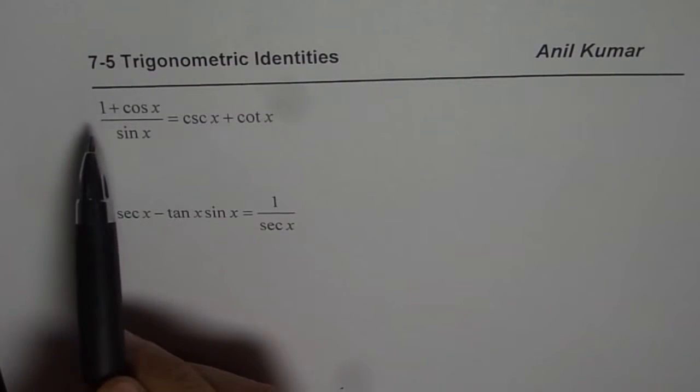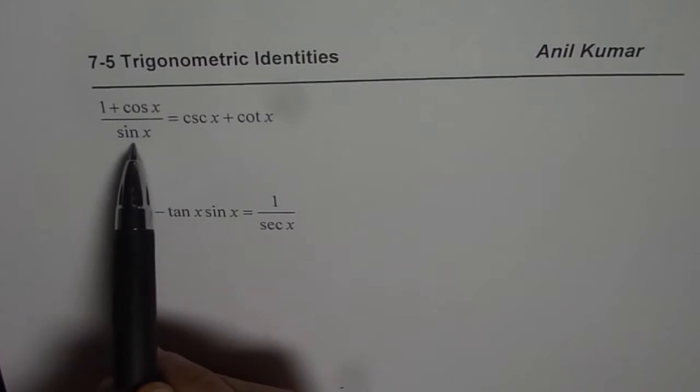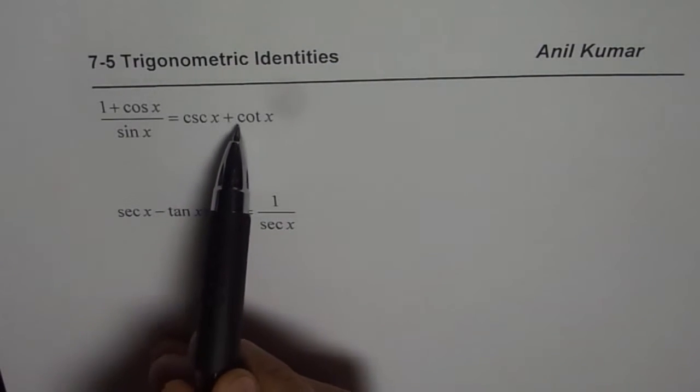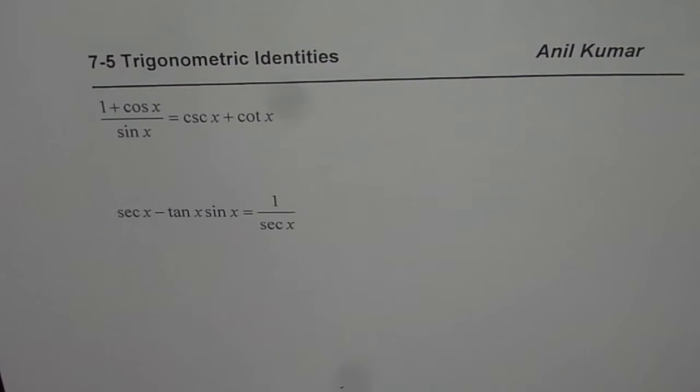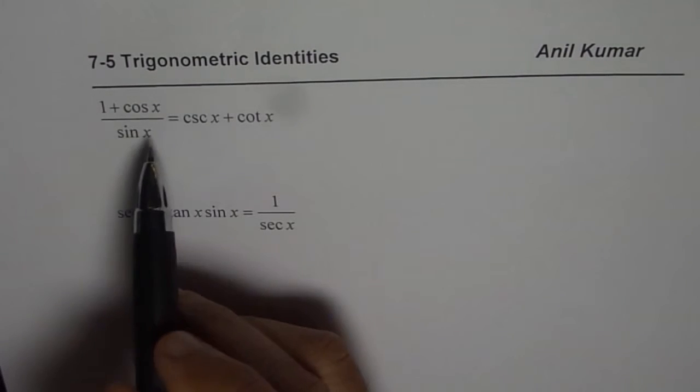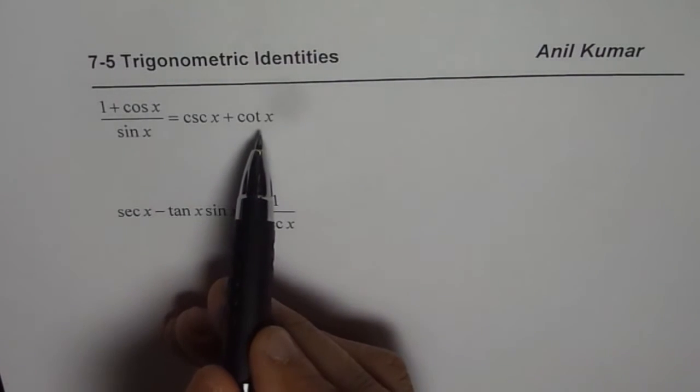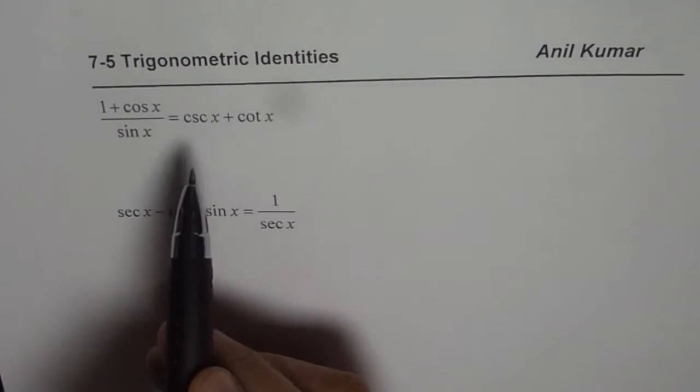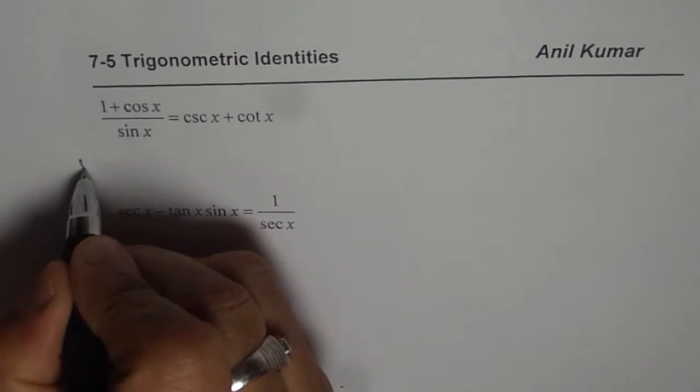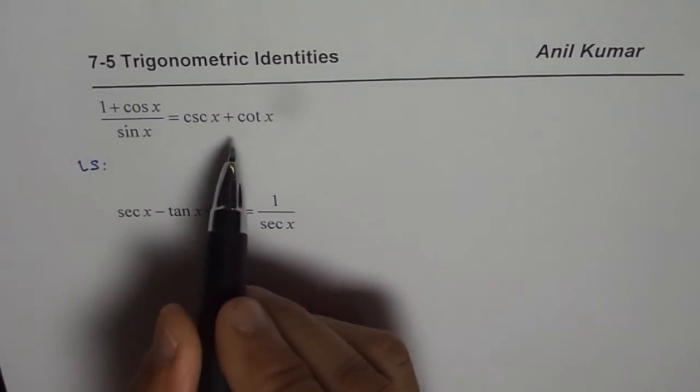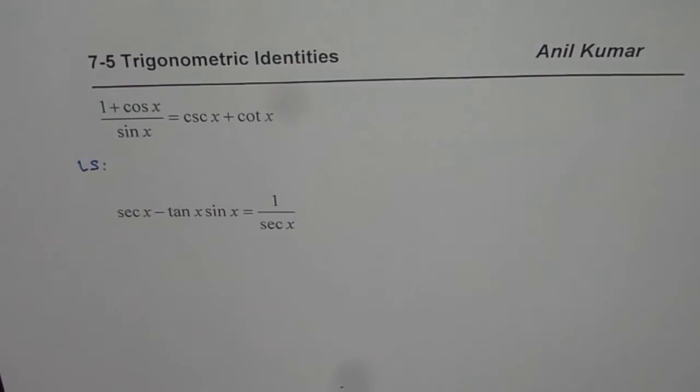The first one here is 1 plus cos x divided by sine x equals cosecant x plus cotangent x. Now in such cases you could start with the left side or from the right side, it doesn't really matter. Let me start with the left side in this case. Why doesn't it matter? Because both are simple.